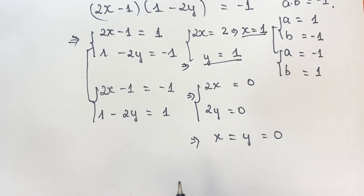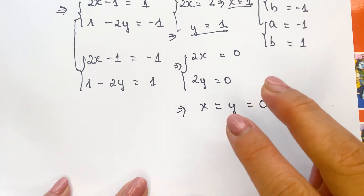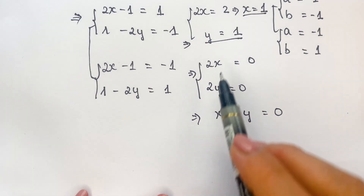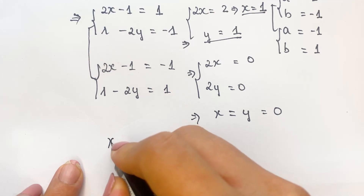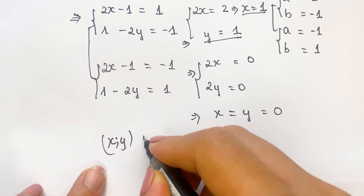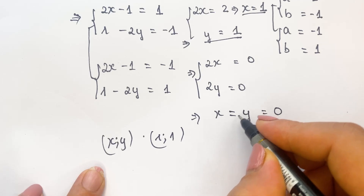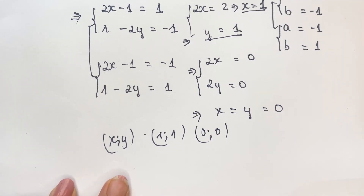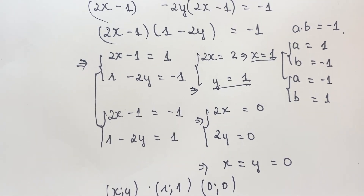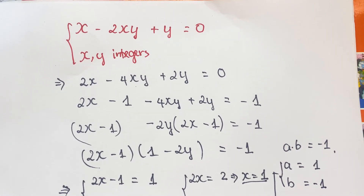Therefore, for the equation, we have only two solutions. Firstly, x equals 1 and y equals 1, and x equals 0 and y equals 0. Thank you for watching my video. Don't forget to subscribe to my channel. Love you all. Bye-bye.